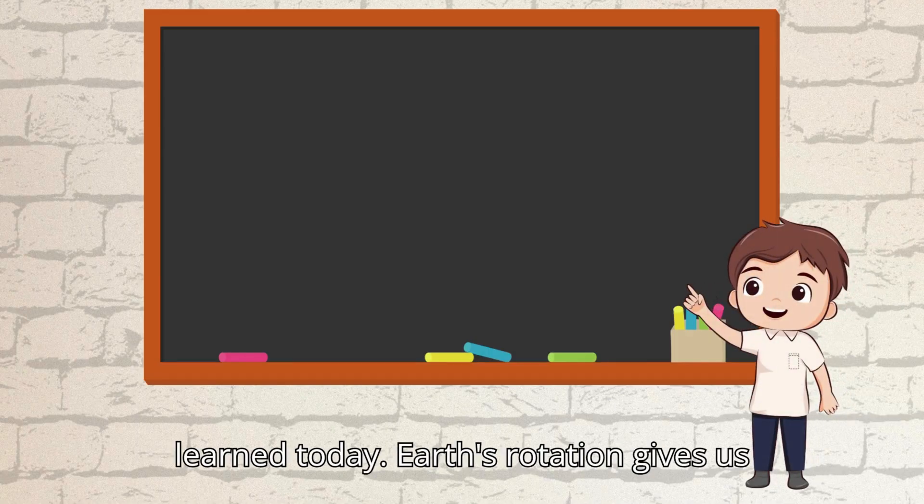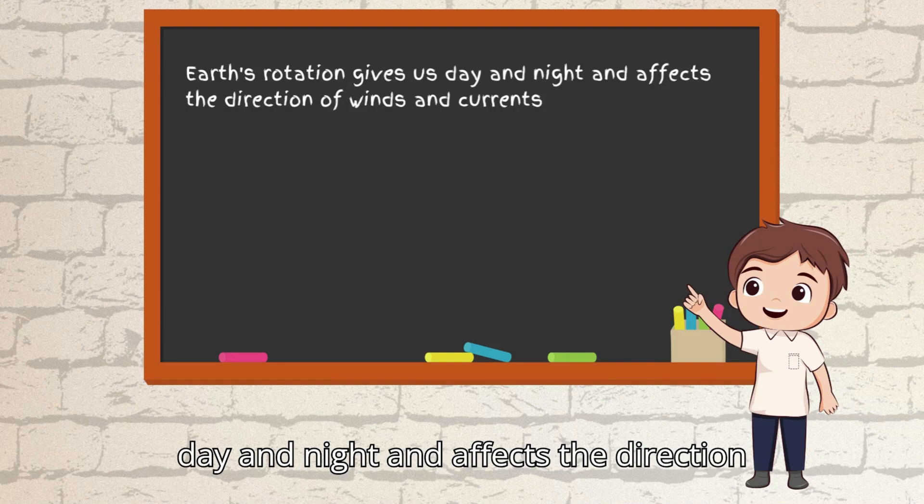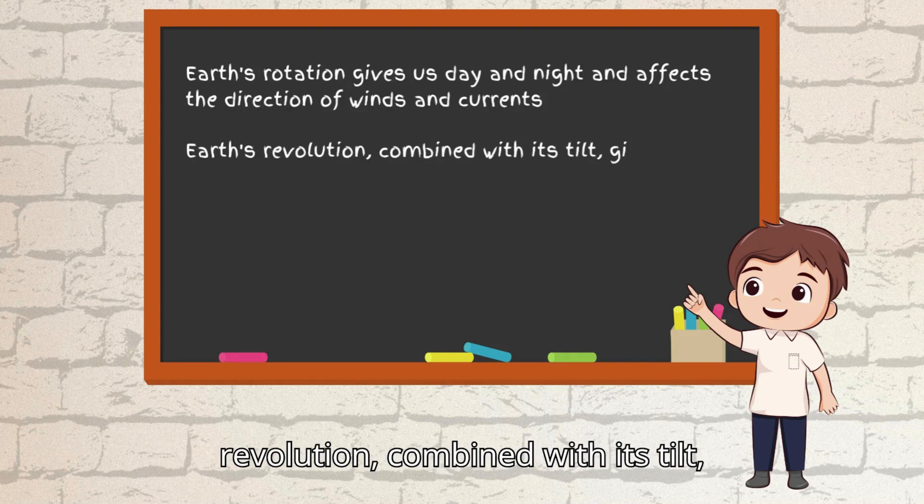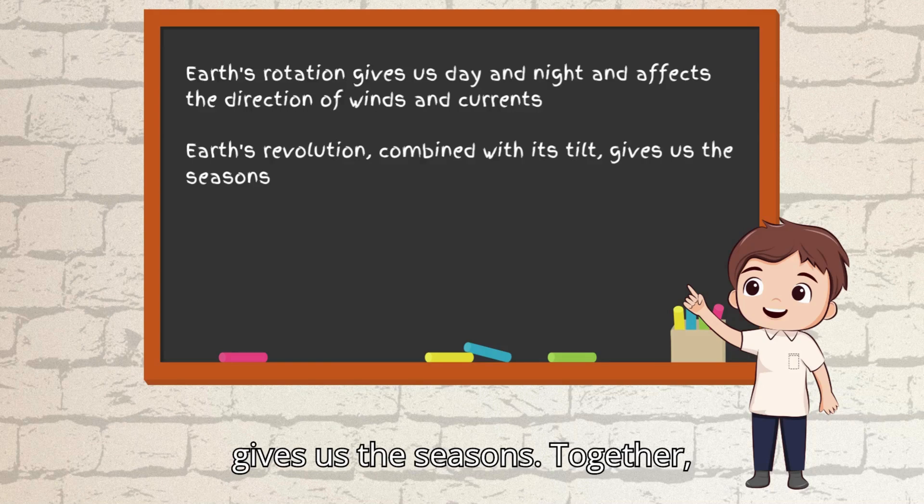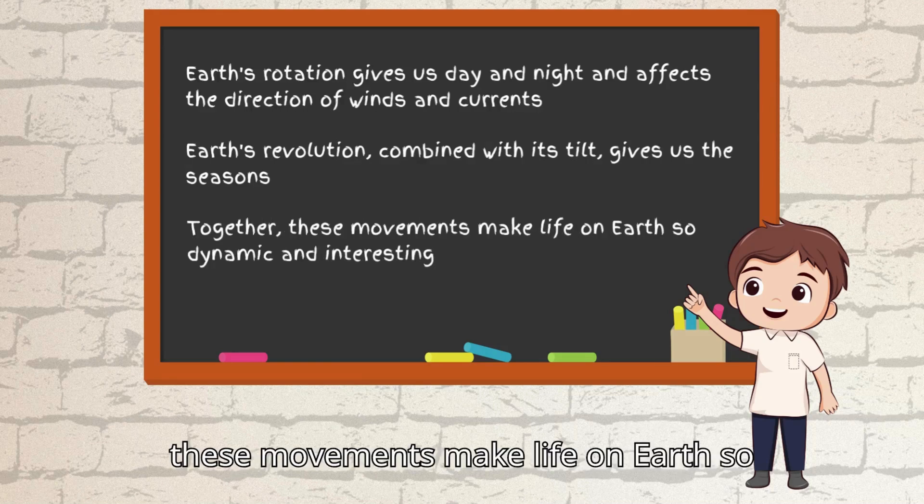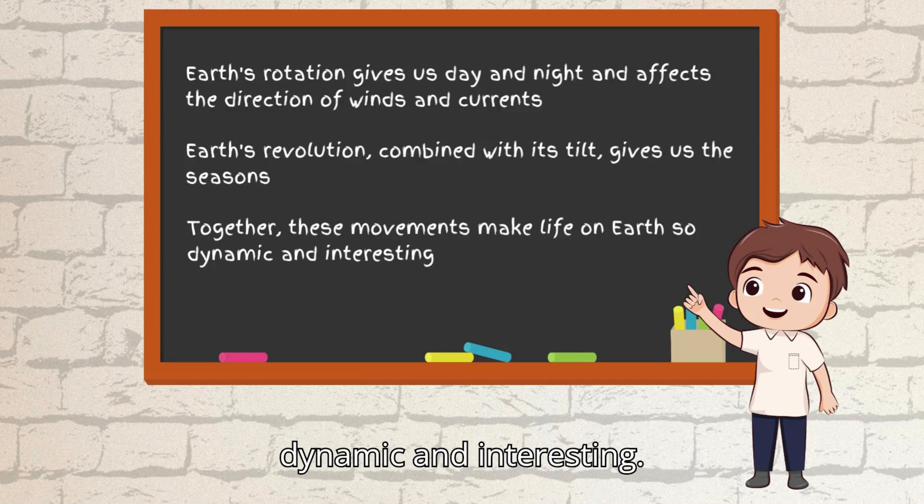Let's recap what we learned today. Earth's rotation gives us day and night and affects the direction of winds and currents. Earth's revolution, combined with its tilt, gives us the seasons. Together, these movements make life on Earth so dynamic and interesting.